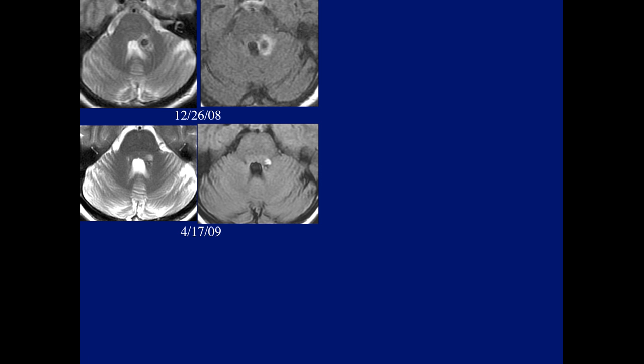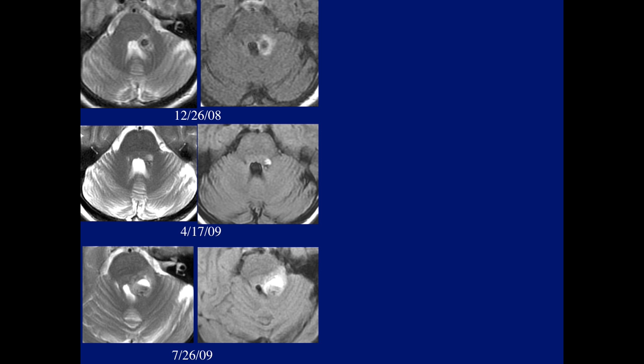Here's a patient who in December of 2008 had a bleed in the cerebellum, the middle cerebellar peduncle next to the fourth ventricle. Four months later we can see resolution of some of the bleed with just a small residual with less deformity of the fourth ventricle. However, in July the patient re-bled, likely from a cavernoma.